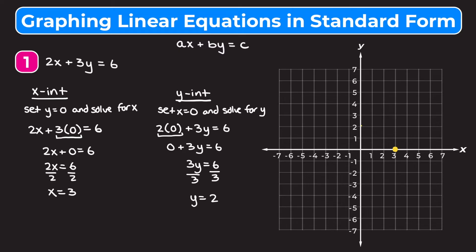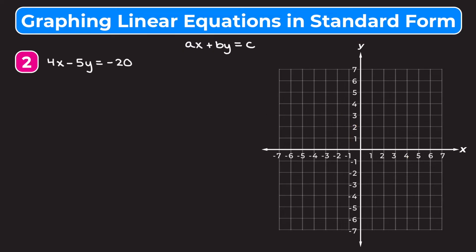We plot the y intercept on the graph and then draw a straight line through both points — and we're finished. Let's go through one more example using x and y intercepts. I encourage you to try this example on your own and then watch me work through it to make sure you've solved it correctly.